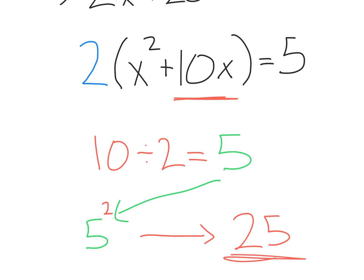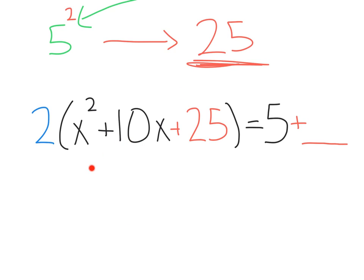And this is what we're going to add to each side of the equation. This is where it gets a little interesting. We add that 25 to the left inside our parentheses. That's x squared plus 10x plus 25.